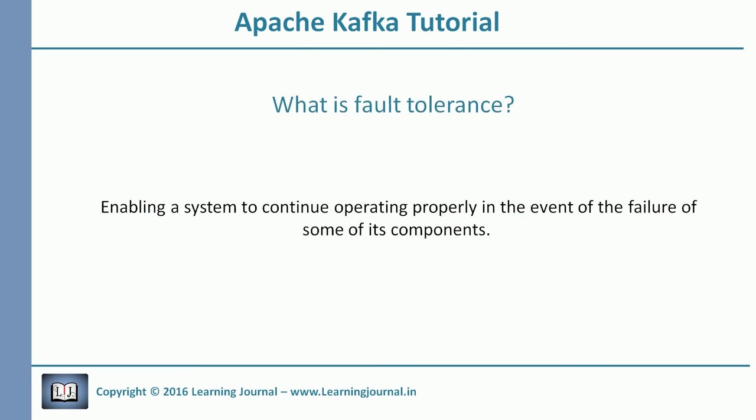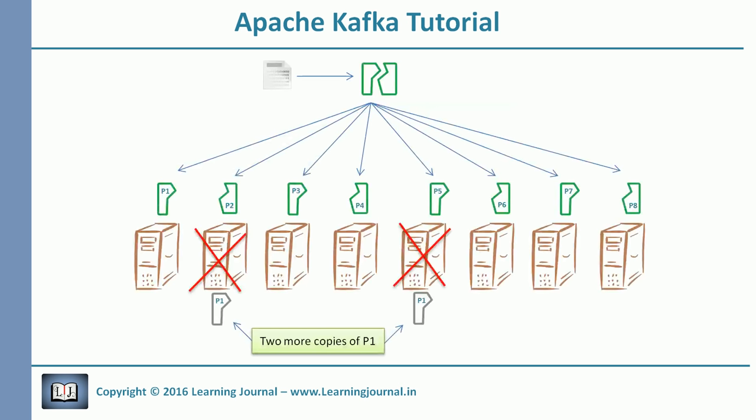The term fault tolerance is very common in distributed systems. It means making your data available even in case of some failures. One simple solution is to make multiple copies of data and keep it on separate systems. So, if you have three copies of a partition and Kafka stores them on three different machines, you should be able to avoid two failures. Even if two of them fail, you can still read your data from the third system.